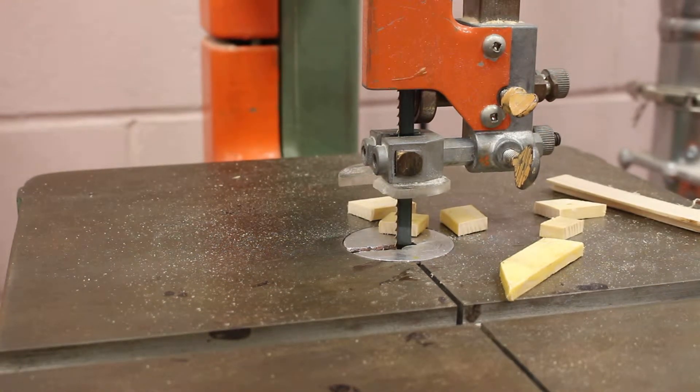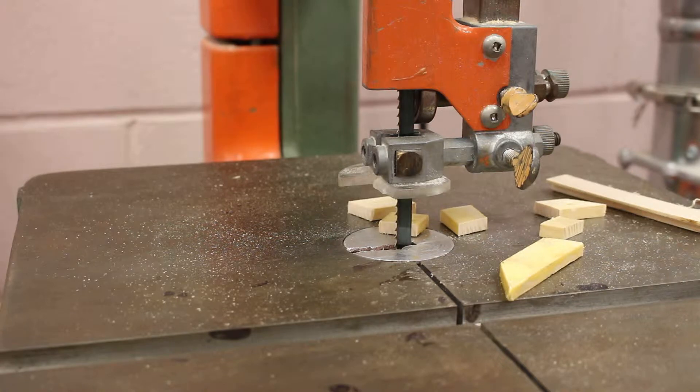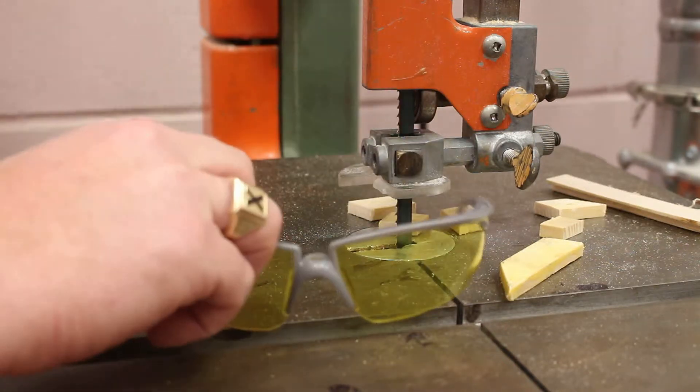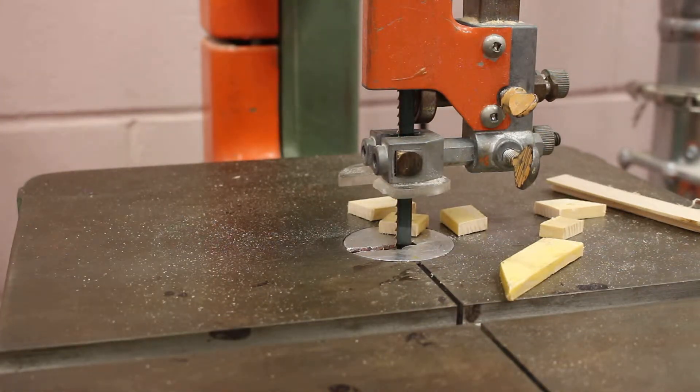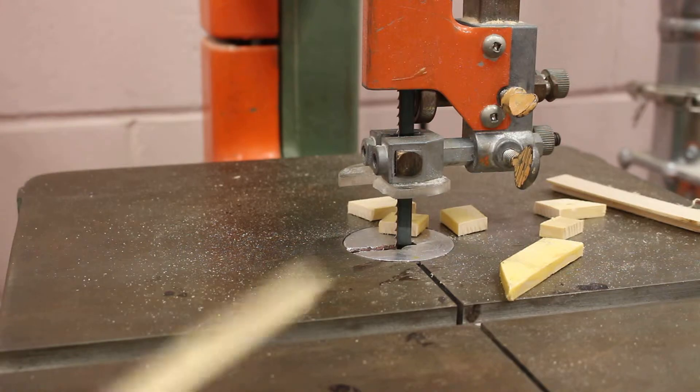Okay folks, next up is the bandsaw. The first three things I usually do are: one, make sure the dust collector is on - I don't have it on right now because you wouldn't hear me; two, safety glasses; and three, I want the area to be clean before you start working.